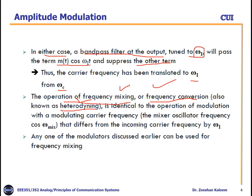This process is identical to the operation of modulation, with the mixer oscillator frequency differing from the incoming frequency by ωI. We have frequency ωC and shift it to another frequency ωI. Any one of the modulators discussed earlier can be used for frequency mixing, using the same process we discussed in previous lectures.